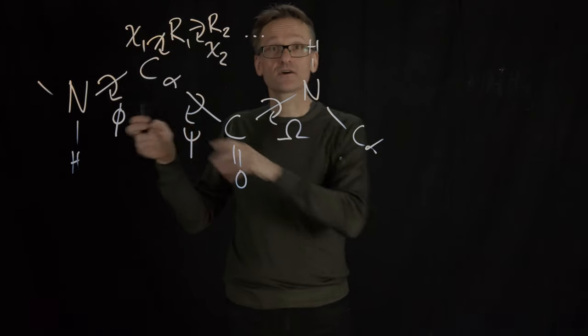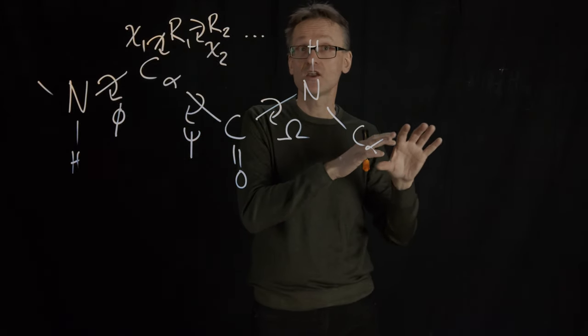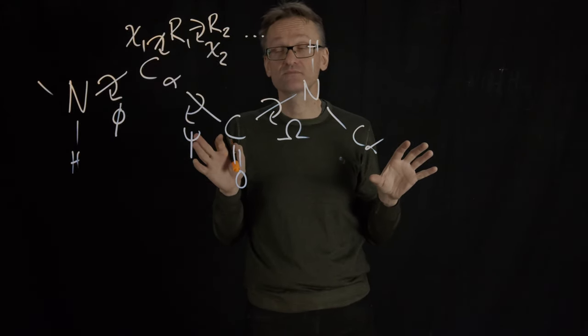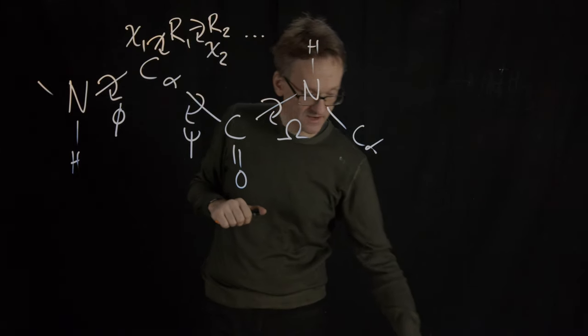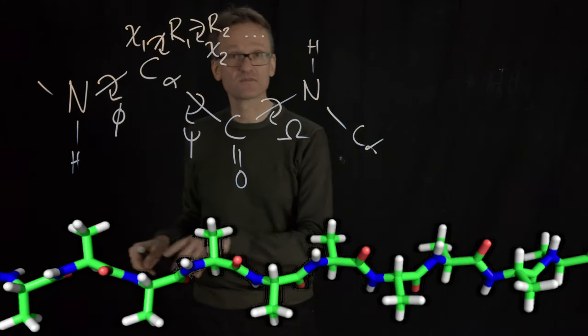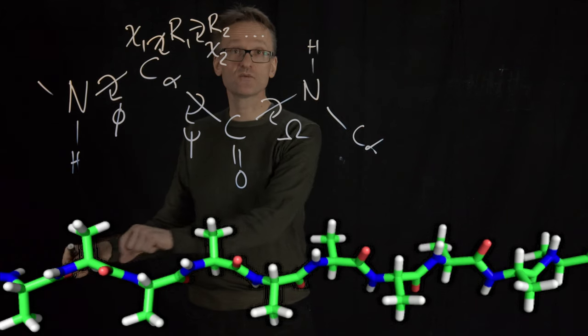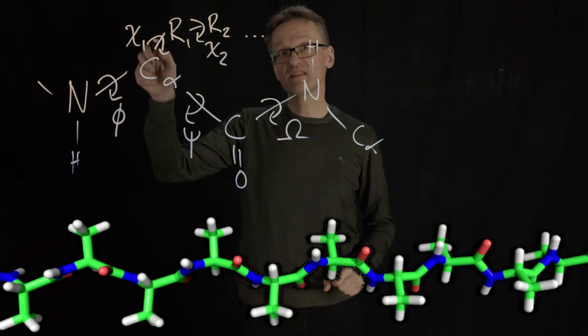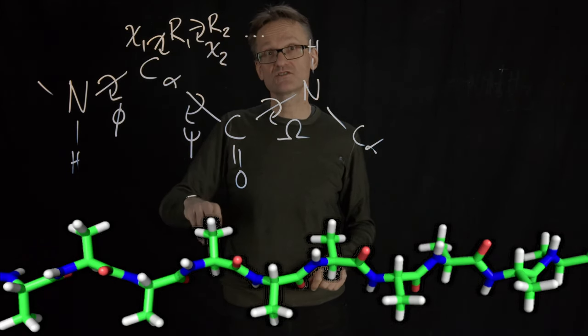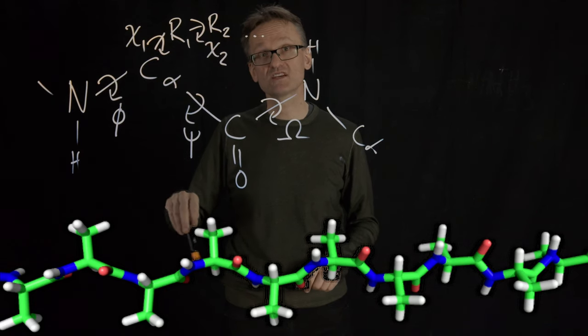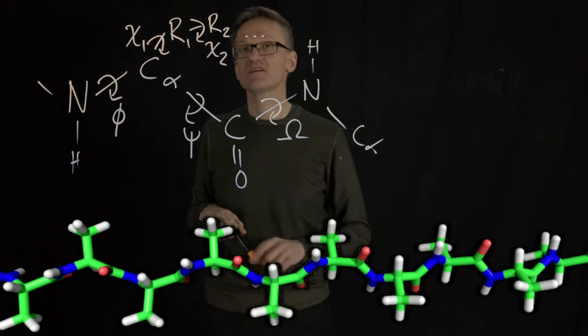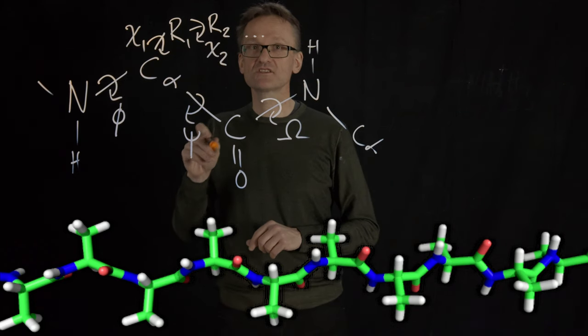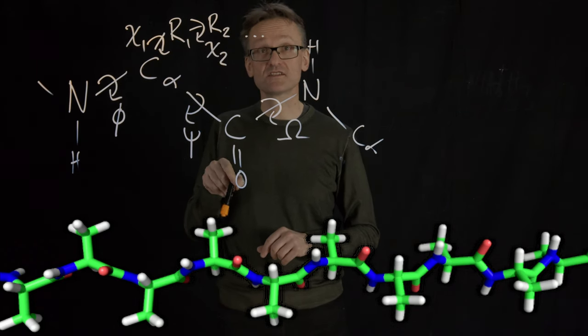Phi and psi are going to determine the degrees of freedom along the entire chain here. If I show that to you, here we have a long chain, so phi and psi determine how the entire chain moves, while omega just determines whether we have a cis or trans bond around the peptide bond. The chi bonds determine how the side chain rotates.